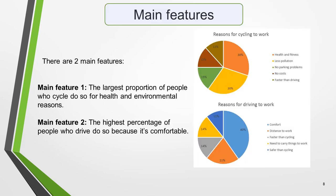So what information is contained in our two pie charts? They show two different methods of travelling to work and illustrate the reason why people choose these types of transport. And what main features stand out? Well there are two main features. Main feature one is the largest proportion of people who cycle do so for health and environmental reasons. And main feature two? The highest percentage of people who drive do so because it's comfortable.